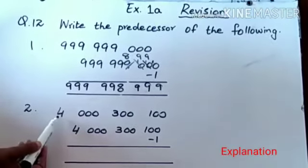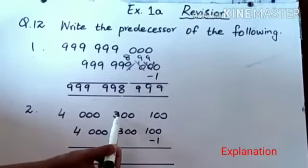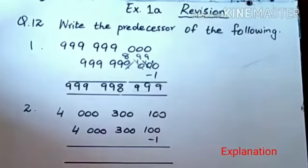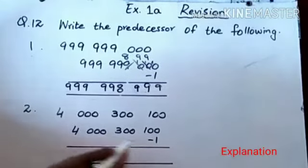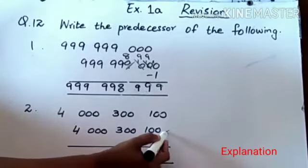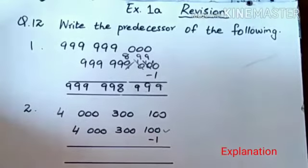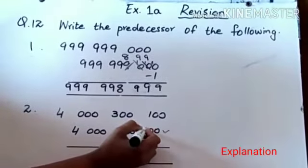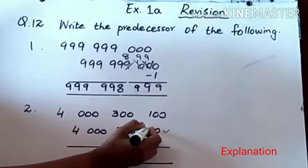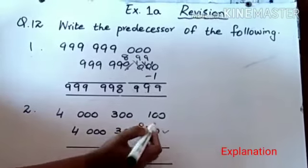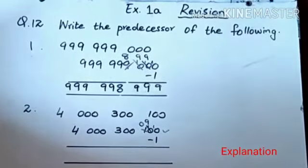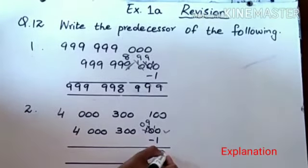Second: 4,000,300,100 minus 1. If 0 is at top position, then you must take carry. It becomes 0, 10, 10. And it is now 9. 10 minus 1: 9.